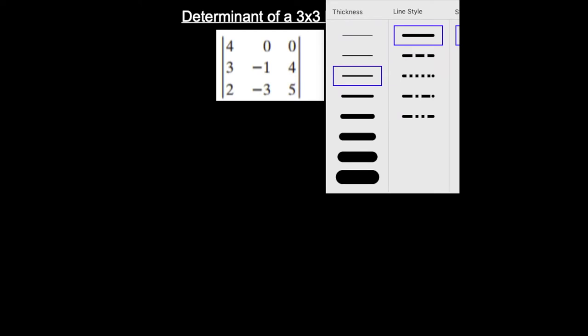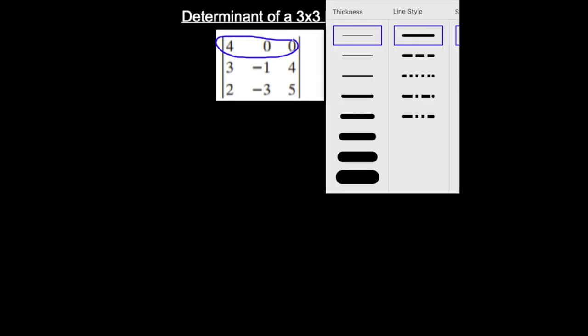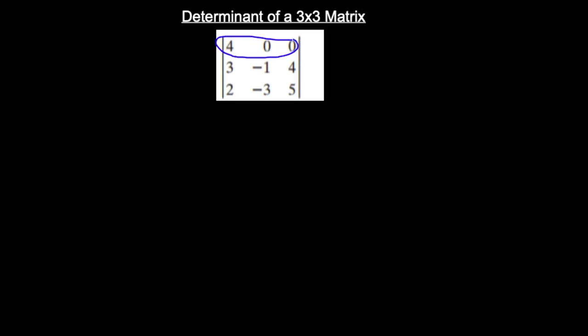To find the determinant of a 3×3 matrix, we go across the top row — row one. The pattern of signs is plus, minus, plus. We start with the first number in row one, which is four.